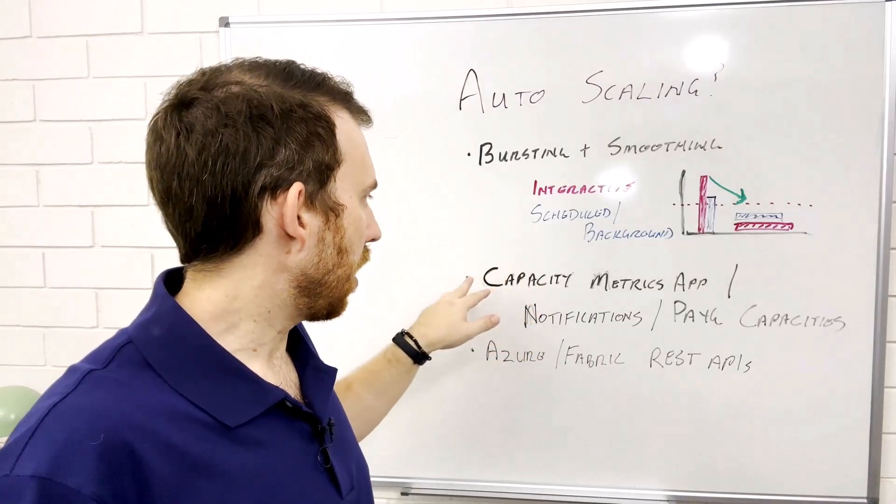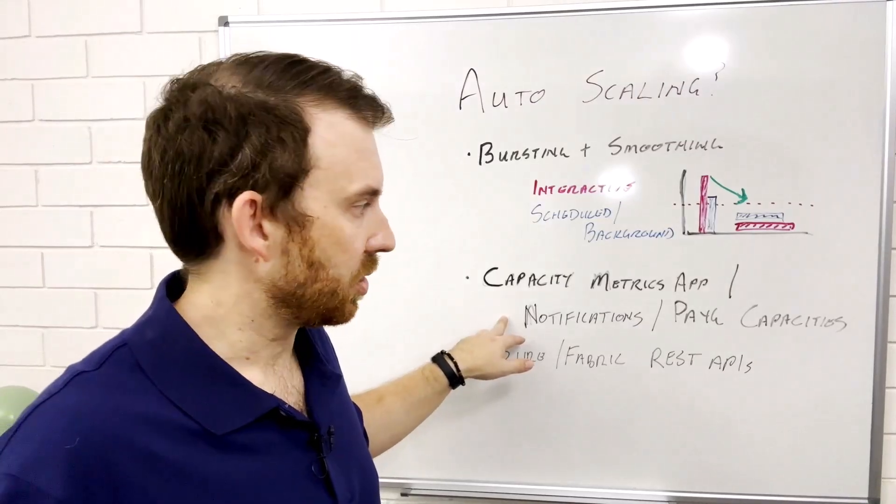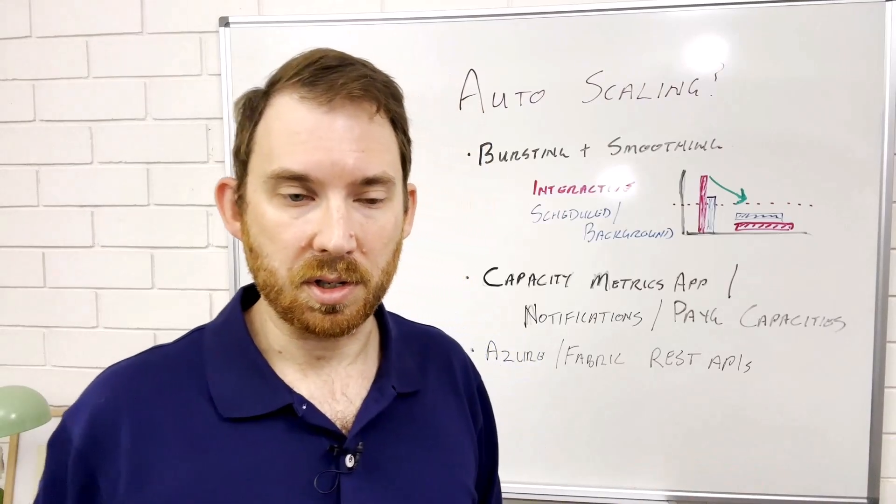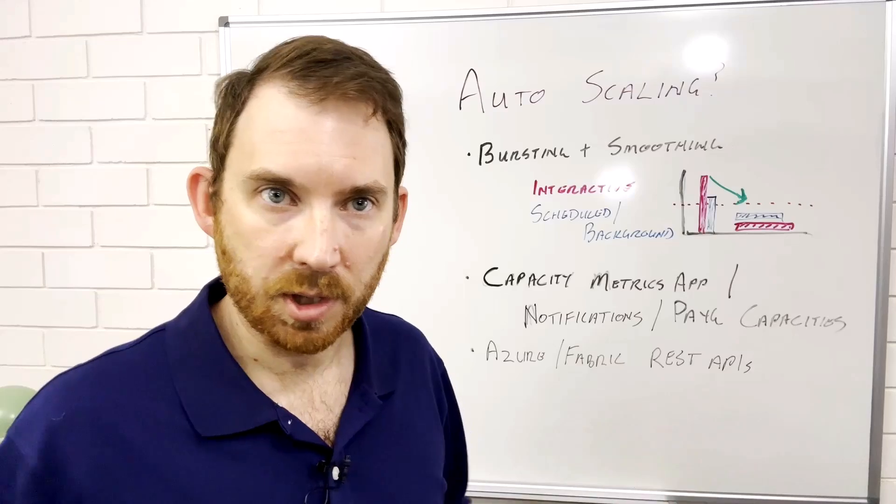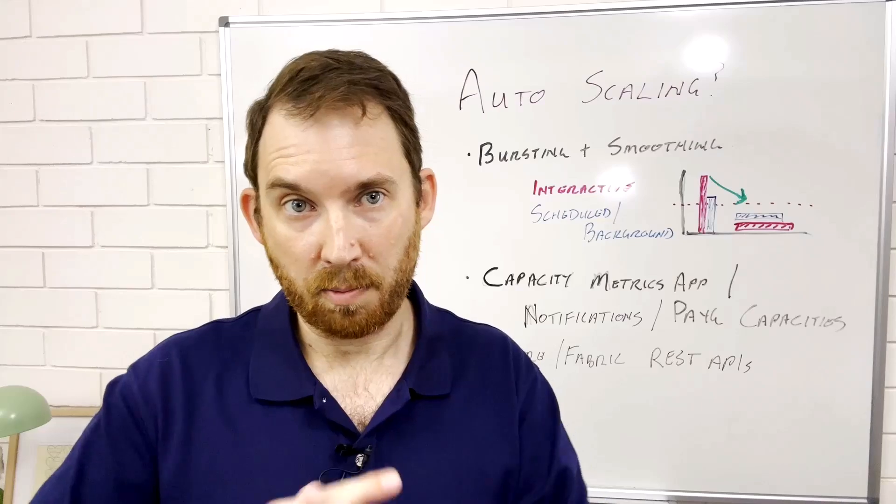But using a combination of if you're finding your limitations and throttling a lot in your current capacity, look at ways you can then use an app to measure that, look for notifications to be alerted when that happens and impacts users, and then test out your workloads with some temporary performance monitoring and you can make decisions around scale up or scale out.